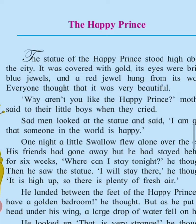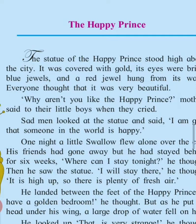The next day, the bird goes back to the prince with the intention of bidding him farewell. But the prince convinces the bird to delay his plan for flying to Egypt by one more night. This time, the prince asks the bird to take the jewel that forms his other eye in order to help a little girl selling eggs in the square below.